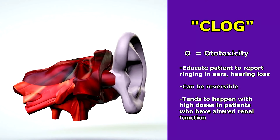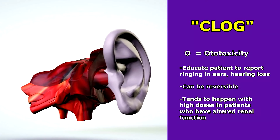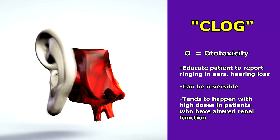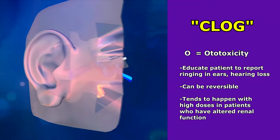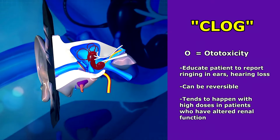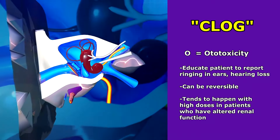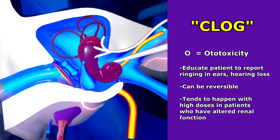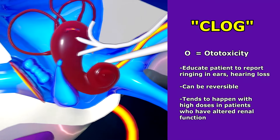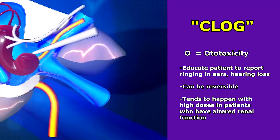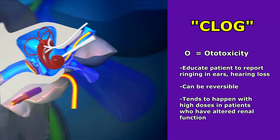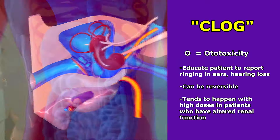O is for ototoxicity — a toxicity affecting the ear, specifically the hearing structures of the ears. It tends to be reversible, so you want to tell your patient to immediately report any ringing in the ears, hearing loss, dizziness, or a feeling of fullness in their ears. This tends to happen in patients taking high doses of these medications who also have altered renal function.